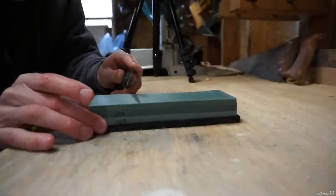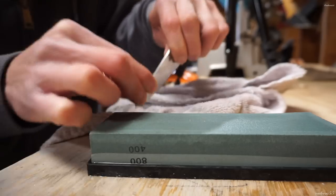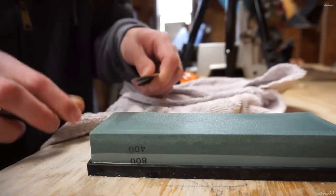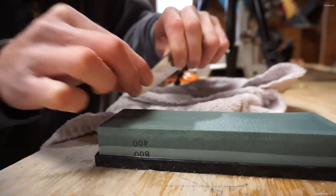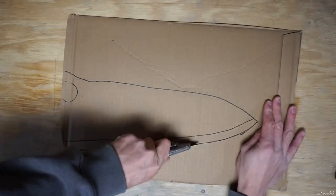Once we located our chip or chips we want to start on the chip closest to the handle. We can then start at this spot and work the blade 90 degrees to the stone grinding our chip out. You want to grind out your chip completely and reprofile the cutting edge to the tip of the blade.